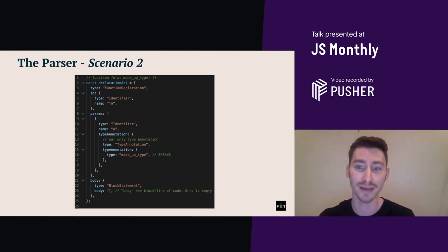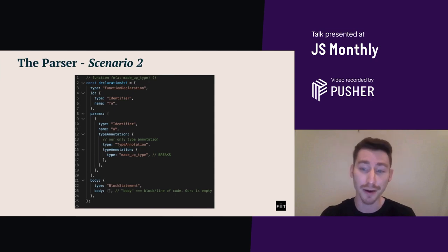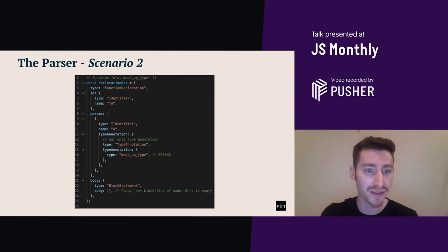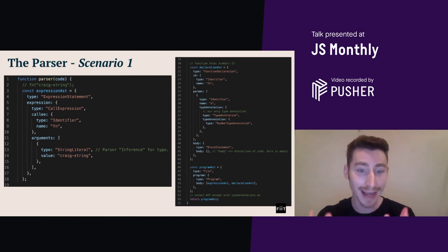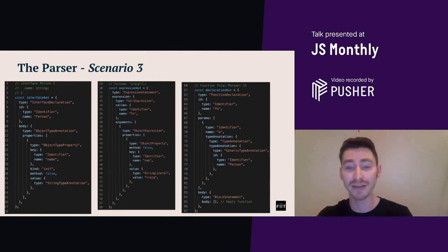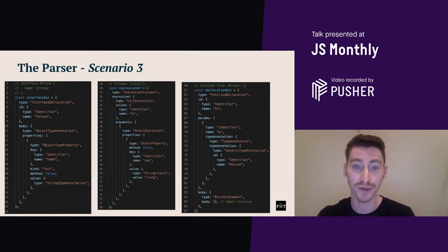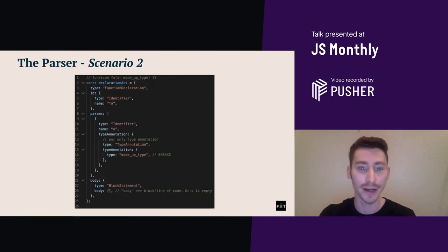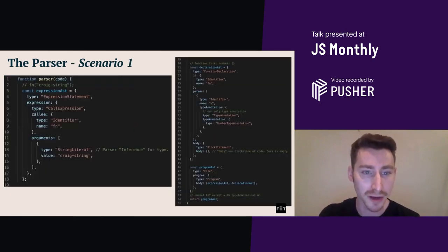The initial code for this is on the top on line 60. Similarly to scenarios one and two, the program AST is going to return an array of these three objects for this scenario — it's going to be an array of all three AST blocks, whereas for scenarios one and two it's just the expression and declaration. As you can see from the previous slides, the main area which actually holds the type annotation object for all three scenarios is the declaration parameter in the declaration AST. All three have that in common — type annotation on scenario two, and on scenario one on line 34, all type annotations are under the declaration AST.